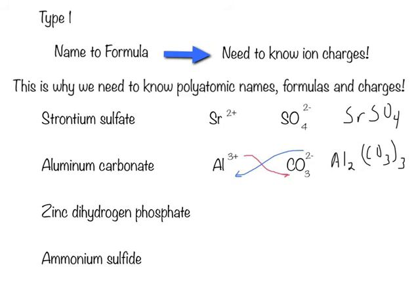Next up, we have zinc dihydrogen phosphate. The zinc ion is a plus 2 ion, and dihydrogen phosphate is H2PO4 with a 1 minus charge. Since the zinc is a positive 2, and the dihydrogen phosphate is a negative 1, I need two dihydrogen phosphates in order to have my charges balanced. When I write my formula, I should have Zn(H2PO4)2 taken two times.